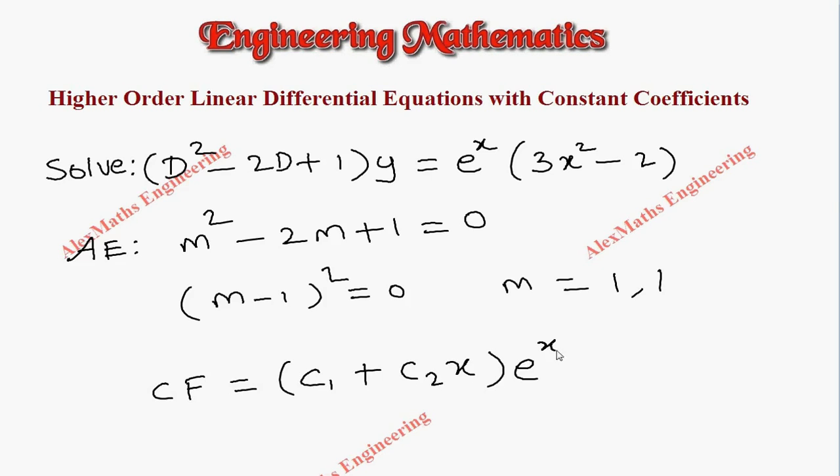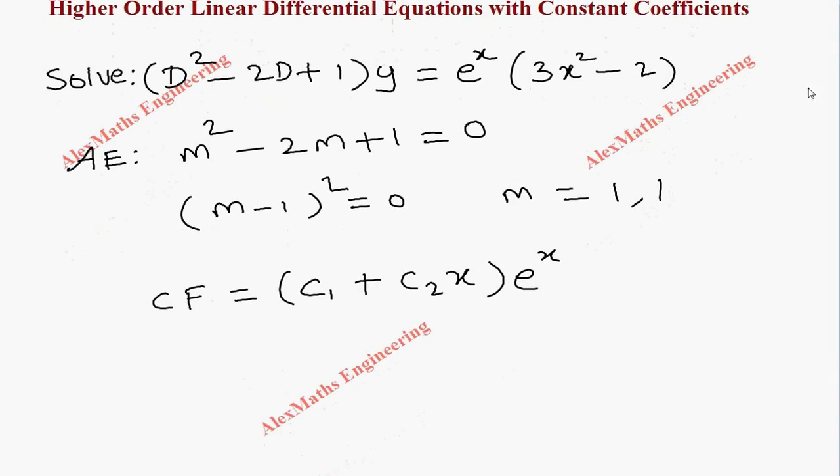Now coming to the particular integral: e to the power x times 3x squared minus 2, whole divided by D squared minus 2D plus 1.